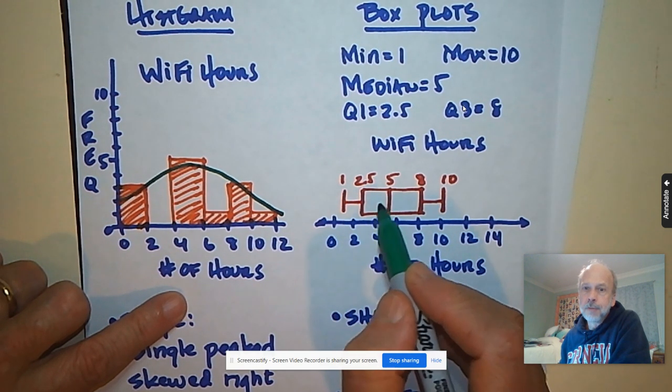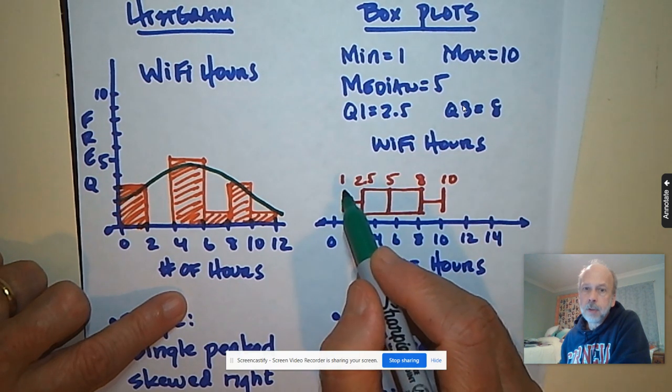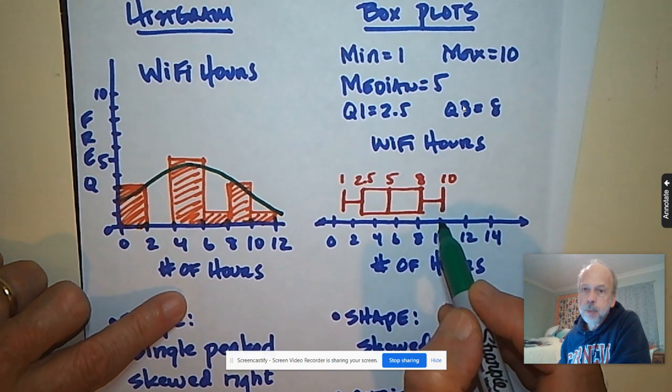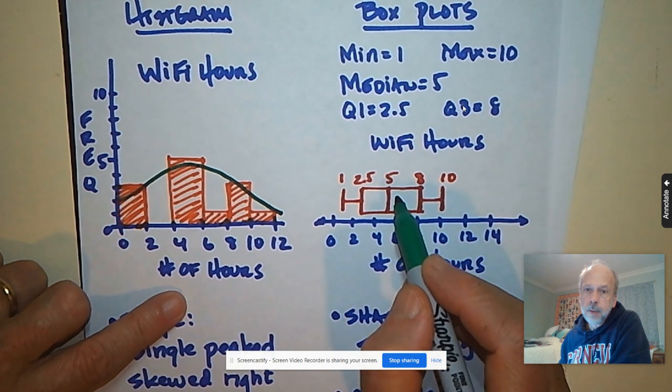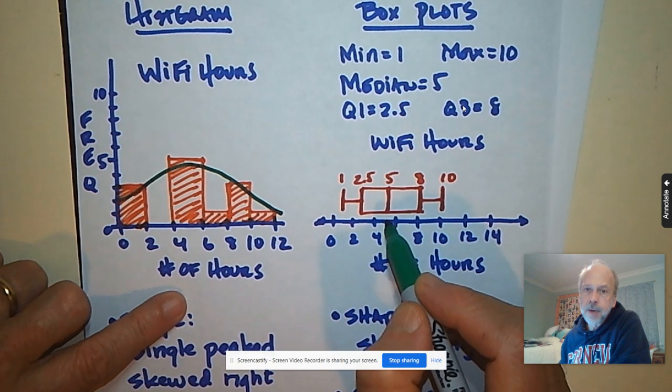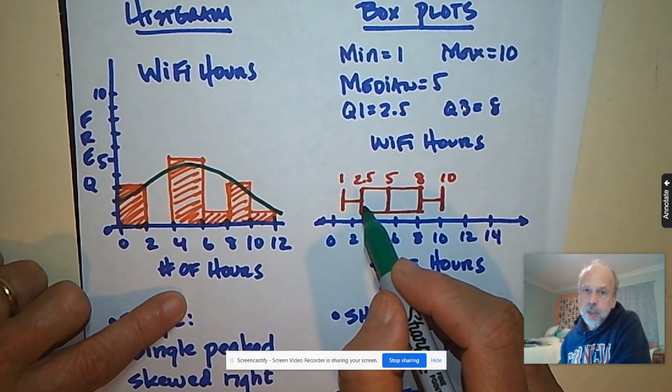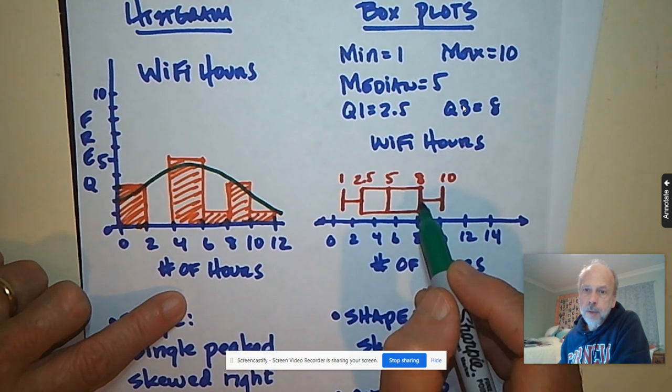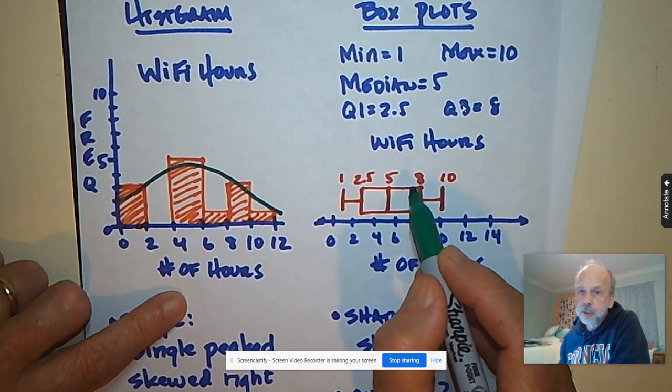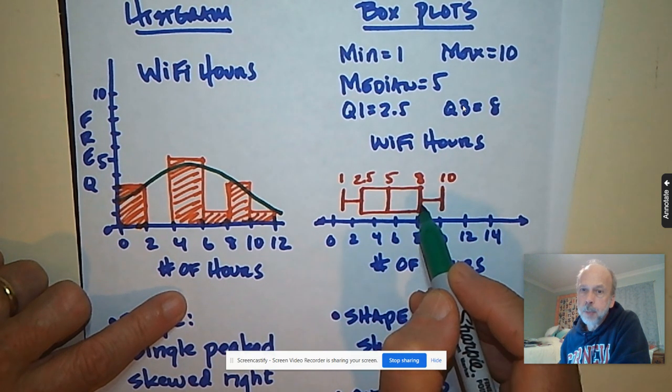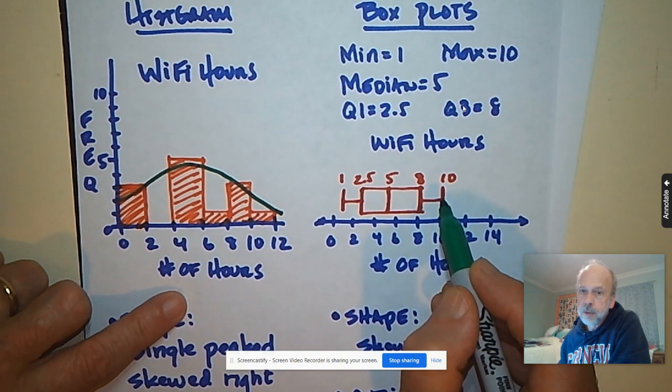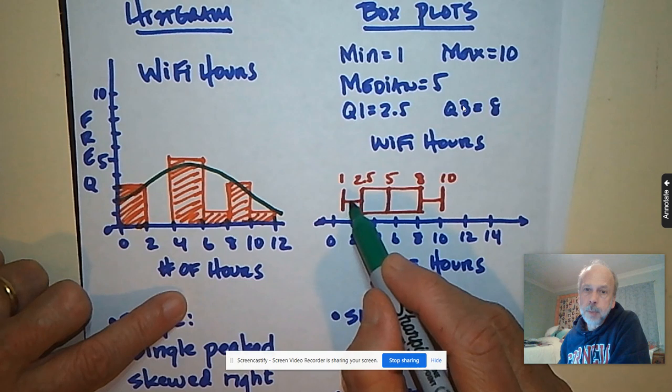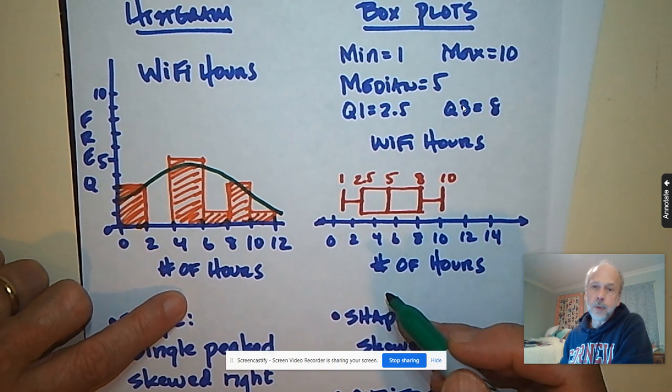Then I put five vertical lines on my graph. Minimum above where the one is. Maximum above the ten. The median here above the five. The quartile one was two and a half, so I put that here. Quartile three was the eight. And then I connect Q1 and Q3 to make the box. I connect Q3 and the maximum to make a whisker. I connect the minimum and Q1 to make the other whisker.